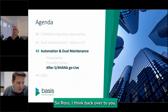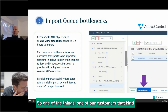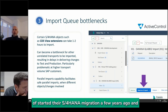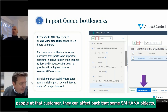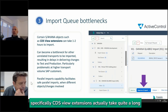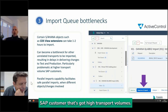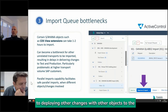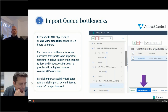So Ross, back to you. One of our customers that started their S4 HANA migration a few years ago — and actually one of the attendees is from that customer — found that some S4 HANA objects, specifically CBS view extensions, take quite a long time to import: one or two hours. For this SAP customer with high transport volumes, that became a bottleneck to deploying other changes to their S4 HANA test and production systems.